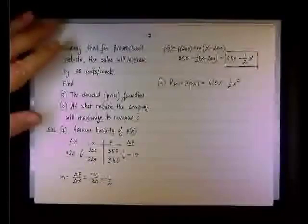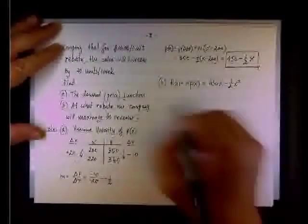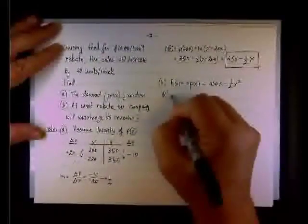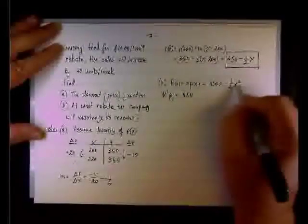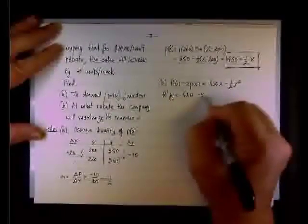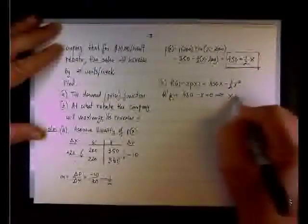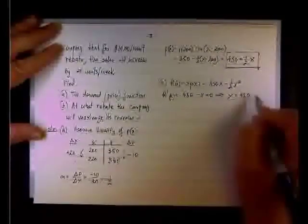So now we find critical numbers by taking the derivative. R prime of x equals 450 minus x and set it equal to 0. Therefore we get quickly the quantity is 450.